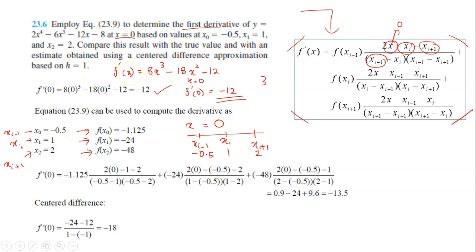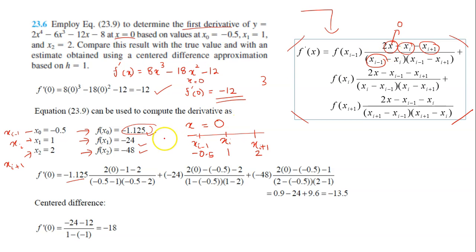Just substitute each x into the y equation to get all the function values. Now we have all the values needed — it's just a matter of substituting them into this bulky equation. So f'(0), the first derivative at x equals 0, is computed by substituting f(xi minus 1), f(xi), and f(xi plus 1) along with the corresponding x values. The final answer is negative 13.5, which is different from the true value, but not by a huge amount.